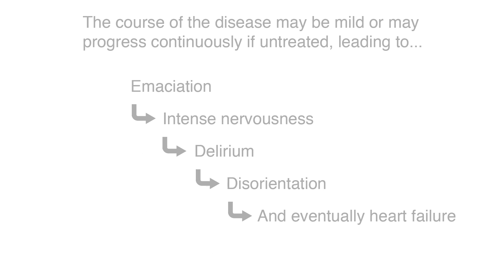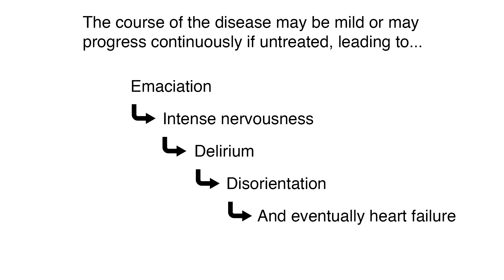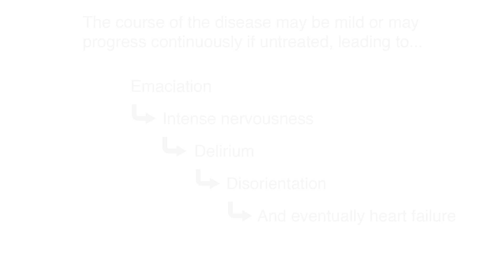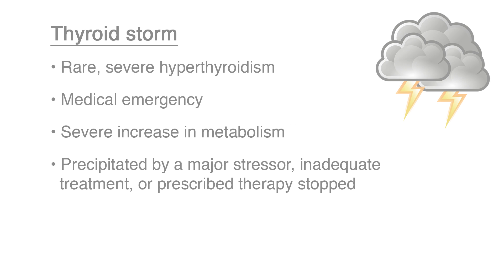The course of the disease may be mild, or it may progress continuously if untreated, leading to emaciation, intense nervousness, delirium, disorientation, and eventually heart failure. A severe manifestation of hyperthyroidism is called a thyroid storm, usually seen in a patient with Graves' disease.